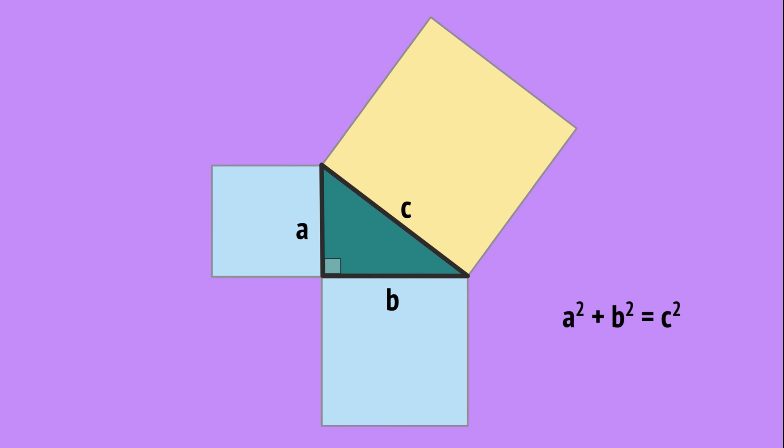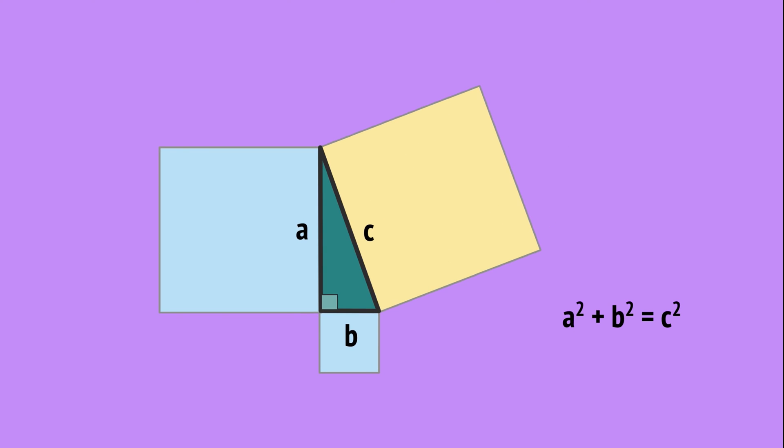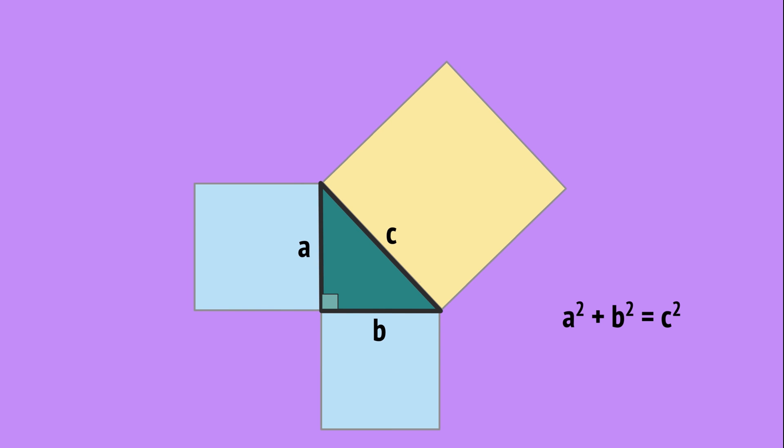And no matter the size and shape of our right-angled triangle, when we add the areas of the two blue squares, we always get the area of the yellow square.